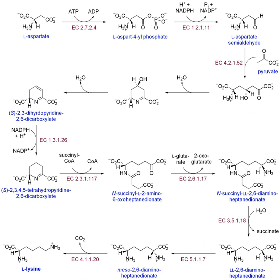Some of these biosynthetic pathways are located within a single cellular organelle, while others involve enzymes that are located within multiple cellular organelles. Examples include the production of lipid membrane components and nucleotides. The prerequisite elements for biosynthesis include precursor compounds, chemical energy, and catalytic enzymes which may require coenzymes.